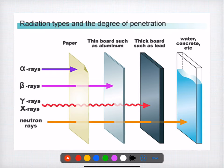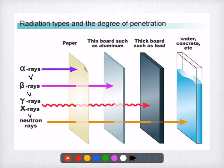Coming to the second question — this is the most commonly asked question. It is related to penetration power. The penetration power will be least for alpha rays, followed by beta rays, followed by gamma rays, and finally the highest will be for neutron rays. In this question they asked the maximum penetration among the given options, so among the options the maximum penetration is for gamma rays.